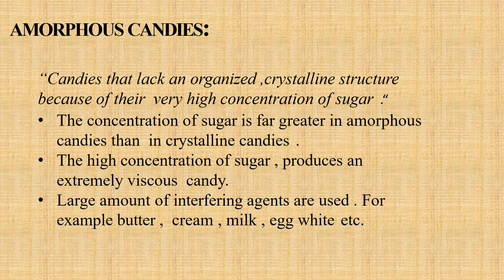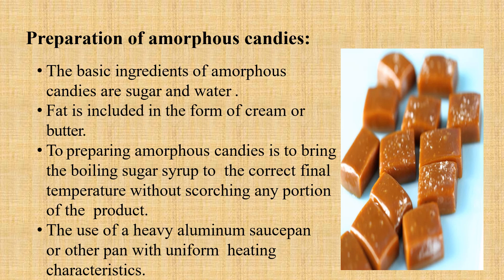Amorphous candies are candies that lack an organized crystalline structure because of their very high concentration of sugar. The difference is that crystalline candies have an organized crystalline structure while amorphous candies do not. The concentration of sugar is far greater in amorphous candies, producing an extremely viscous candy. Large amounts of interfering agents are used — for example butter, cream, milk, and egg whites. Basic ingredients are sugar and water, with fat included in the form of cream or butter. To prepare amorphous candies, the boiling sugar syrup must be brought to the correct final temperature without scorching any portion of the product.